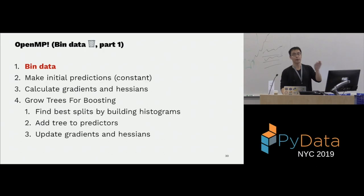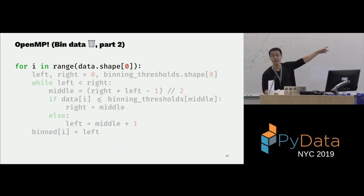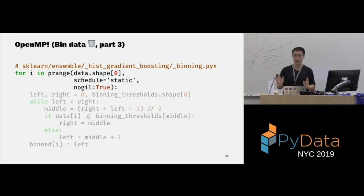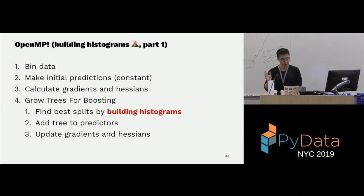For binning our data, we have to map from real values to integer values — that's a binary search. In Cython it looks just like Python with a normal range loop. To use OpenMP, you change the range into a prange, release the GIL, and it works — magic. This is now taking advantage of all your cores and makes it go faster.